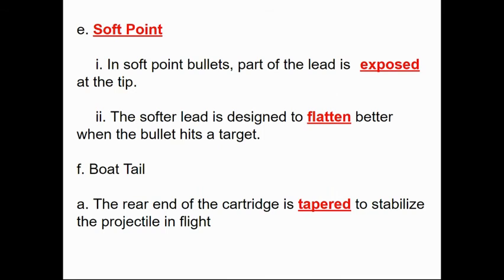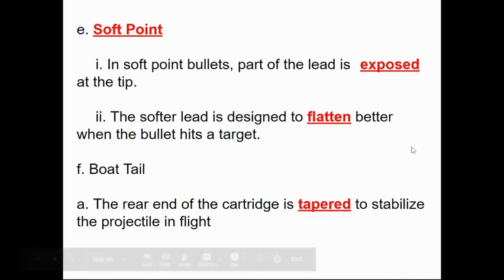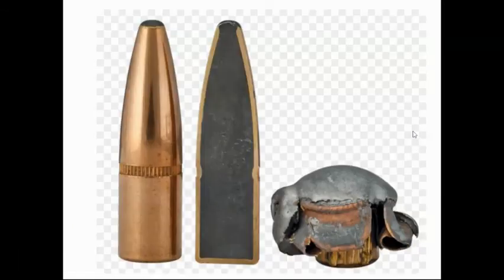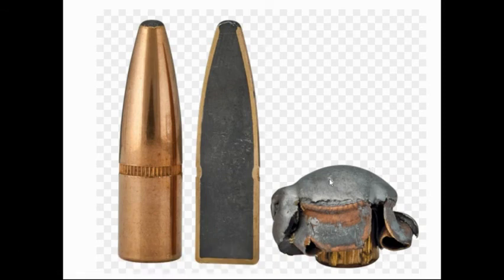Soft points have exposed lead at the tip. That softer lead is designed to flatten when the bullet hits its target. The boat tail refers to the tapering at the rear for stabilization of flight. So with a soft tip, the exposed lead is not hollow, but it still peels back quite well. This deformed shape — mushrooming or peeling back — is also what a hollow point is designed to do.